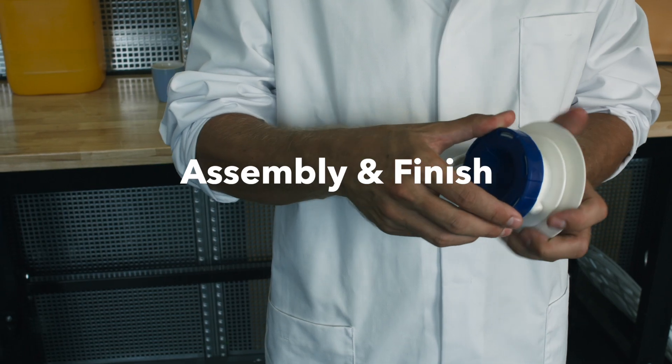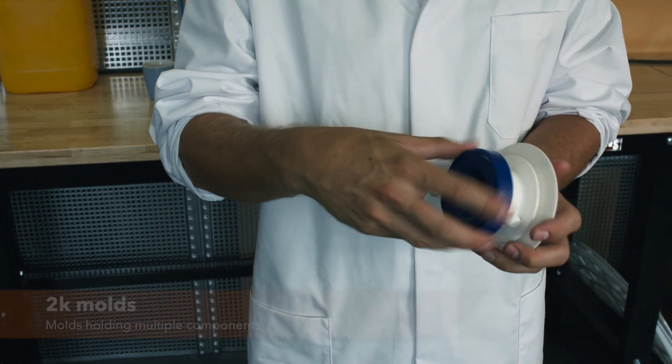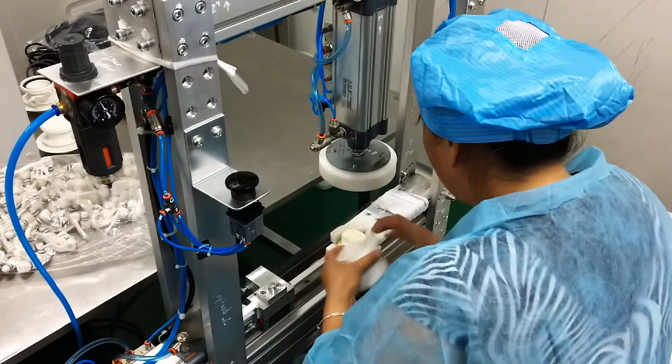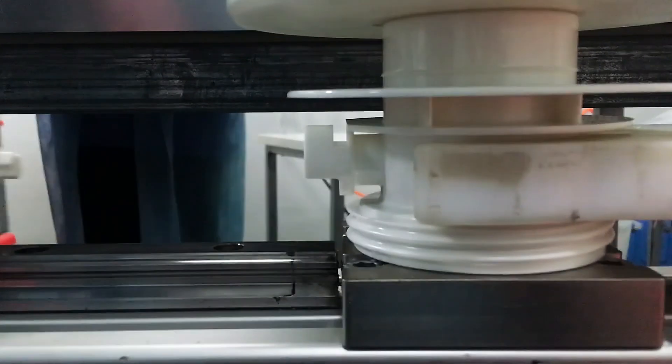If the product is relatively complex, 2K molds can be used. Afterwards, the different parts will be assembled by hand, machine, or even inside the mold itself.